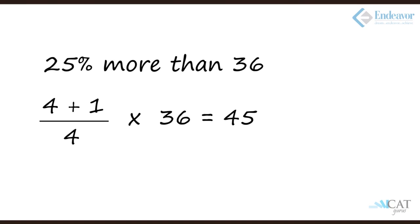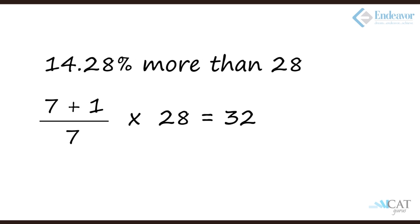A question which looks slightly trickier or lengthier in calculation is so simple just by using ratios. Let's practice more examples. 25% more than 36: 25% is 1 by 4, so it becomes 5 by 4 into 36, which gives us 45. 14.28% more than 28: 14.28% gives us 1 by 7, so the equation becomes 8 upon 7 into 28, which gives us 32.